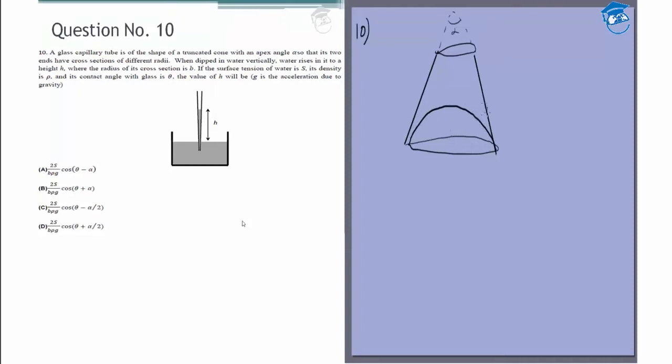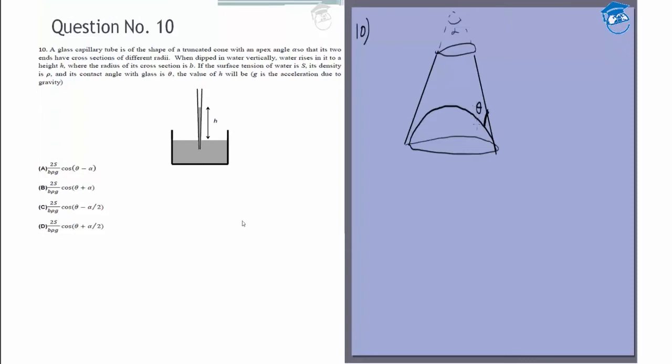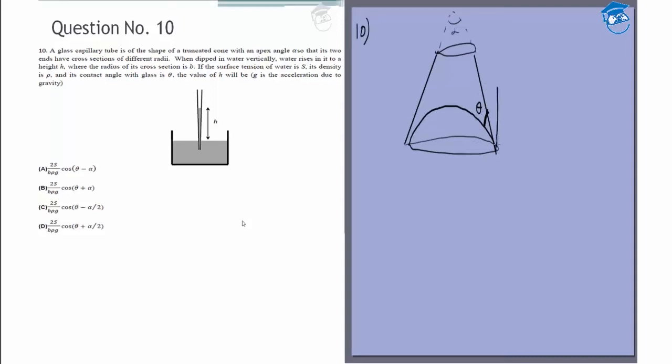It would be the standard thing except the contact angle now is this angle, which is theta. Normally the wall was vertical so the contact angle was the same as the angle with the vertical. That's not true in this case. This angle, the rest of it with the vertical, is alpha by 2 because this would be alpha by 2 - alternate interior angles.